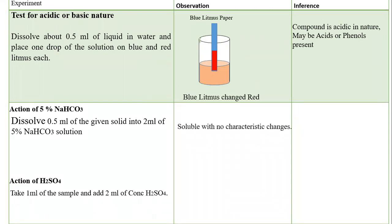After that we will see the action of 5% NaHCO3, that is sodium bicarbonate. It was soluble in it but no characteristic changes were observed, so it can be an acid or ester. Then we tested the action of H2SO4 — it was soluble, which is why it can be a group 5 compound.